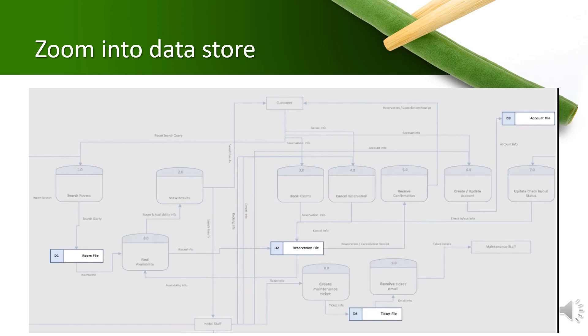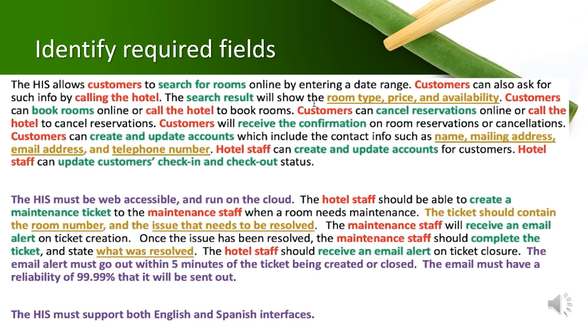There are four data stores involved, which are room file, reservation file, ticket file, and account file. The next step is to identify the required fields for each data store, so let's get back to the case study. From the case study, we noticed that room type, price, and availability are the required fields dealing with the room file data store — meaning data required for a room includes room type, price, and availability.